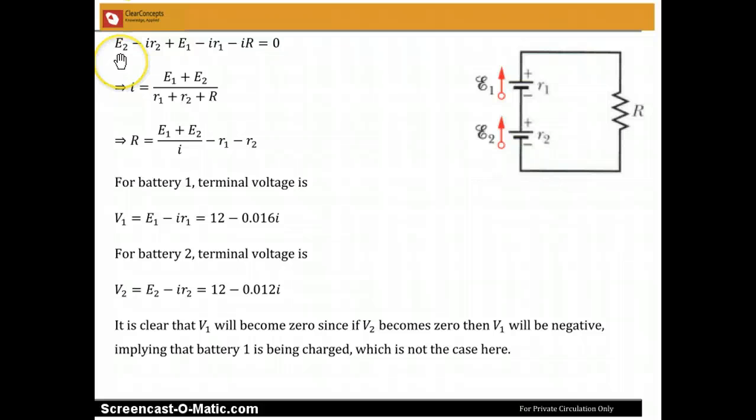So we have E2 minus IR2, which is the terminal potential difference for the second battery, plus E1 minus IR1, which is the terminal potential difference for the first battery, and then minus IR, which is the potential drop across the resistor, and that should be equal to zero because we come back to the same point.